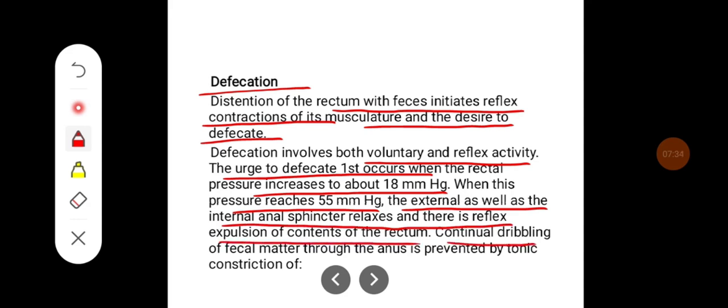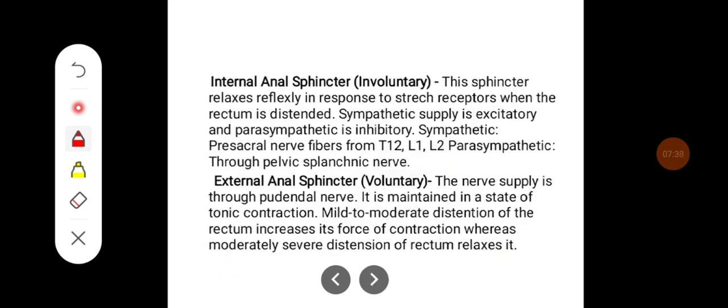Continual dribbling of fecal matter through the anus is prevented by tonic contraction of the internal anal sphincter and external anal sphincter, which are involuntary and voluntary respectively.